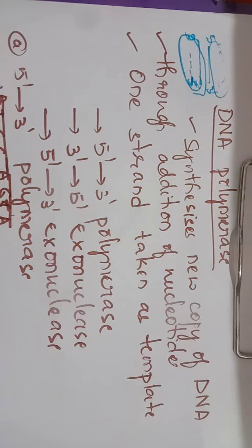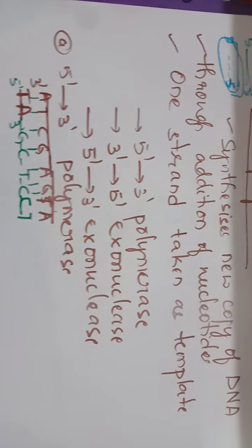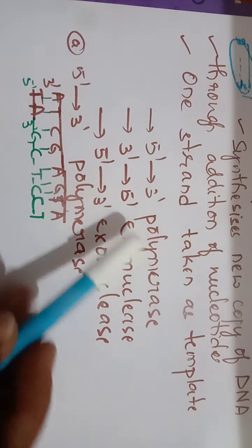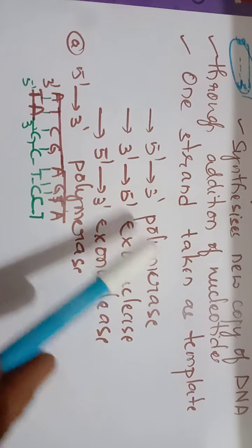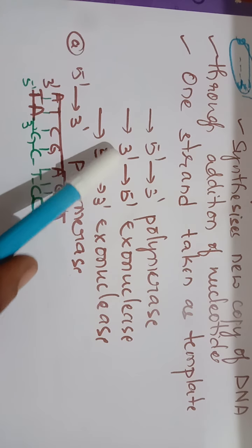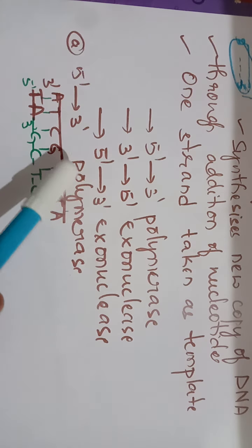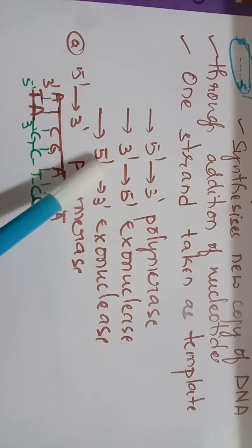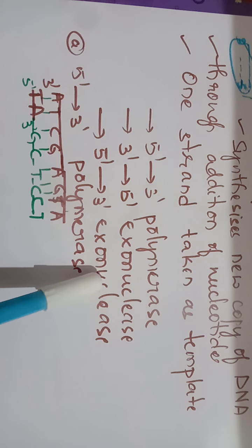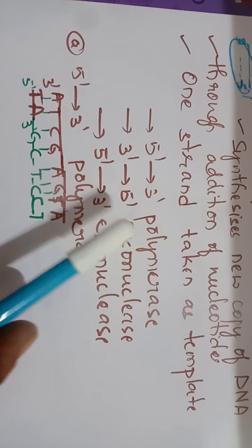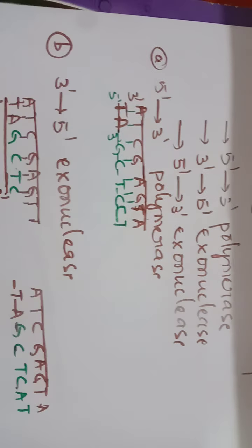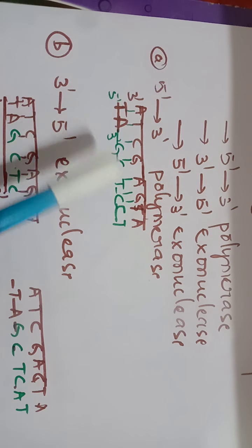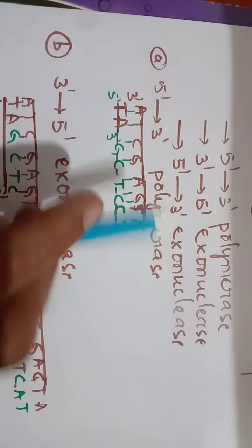We also discussed that DNA polymerase I has three different properties: first is 5 prime to 3 prime polymerase activity, second is 3 prime to 5 prime exonuclease activity, and third is 5 prime to 3 prime exonuclease activity.